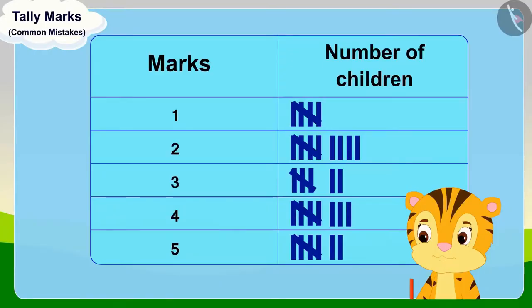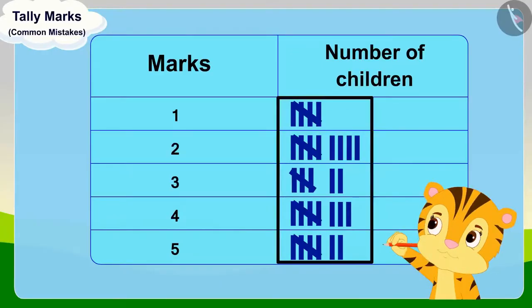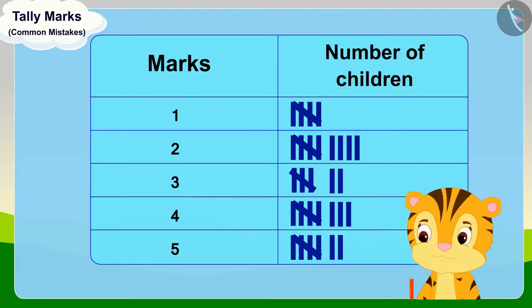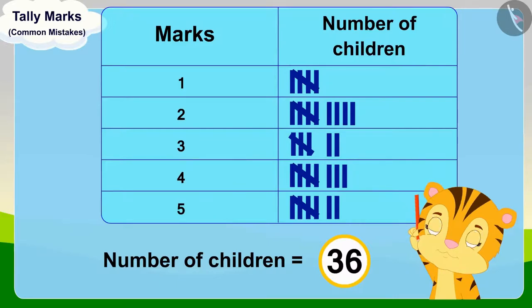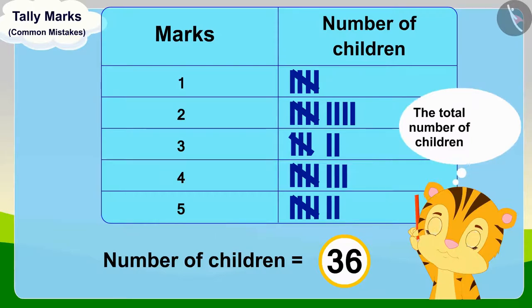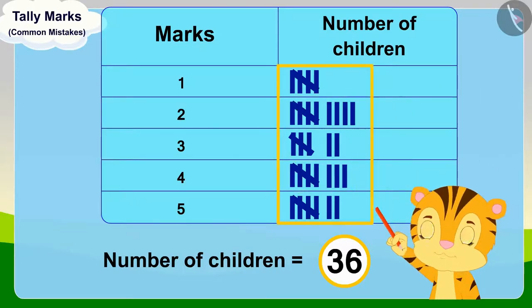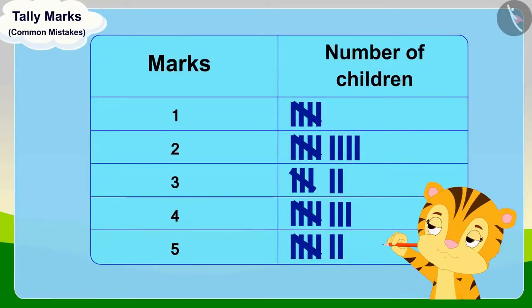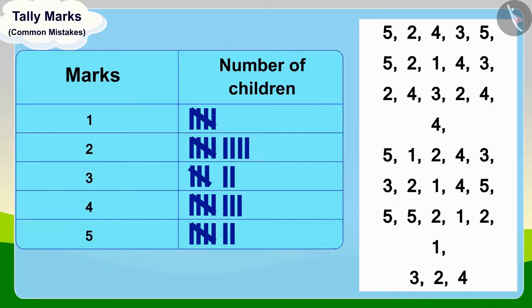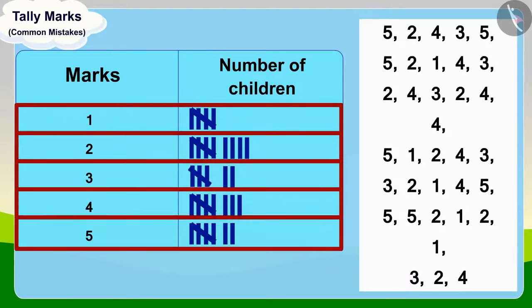But when she looked at the total number of children in the table, she found that the marks of 36 children are recorded. Mrs. Khan started wondering, because the total number of children is 35, and according to tally marks, marks of 36 children are recorded. Then she thought, why not check the tally marks of each score once again?